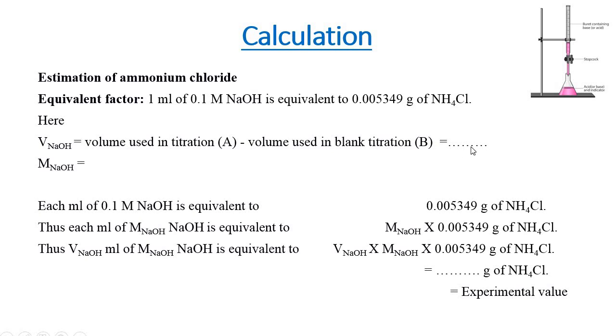We can subtract it and get a volume of NaOH. For M NaOH, each ml of 0.1 M NaOH is equivalent to 0.005349 g of NH4Cl. Thus, each ml of M NaOH is equivalent to M NaOH times the equivalent factor which is 0.005349 g of NH4Cl.